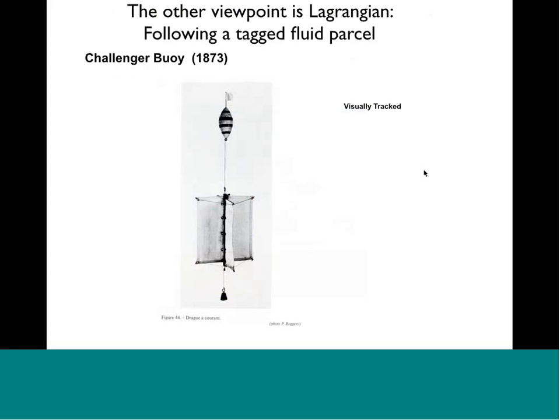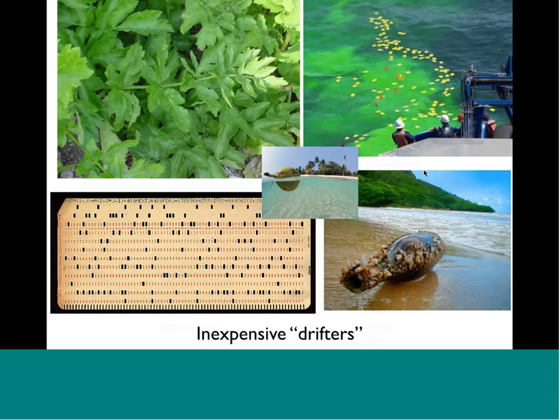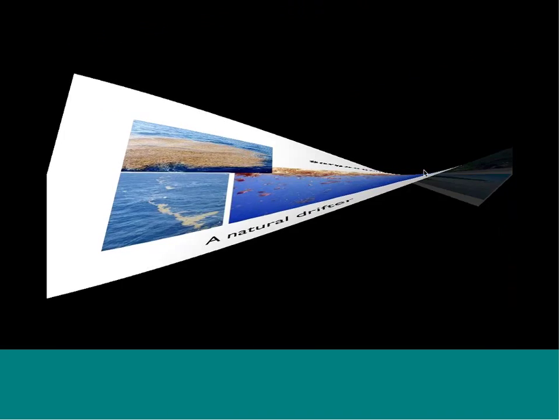The Lagrangian approach involves following a tagged fluid parcel. One of the first Lagrangian instruments came from the RV Challenger, which went around the world measuring biogeochemical and physical properties of the ocean in the latter part of the 19th century. Through the history of oceanography we've used inexpensive drifters — parsnips in the Richardson and Stommel dispersion experiment, IBM cards, messages in bottles, marked coconuts, and dye experiments where aerial photographs of the dye are taken to determine how it moves around.